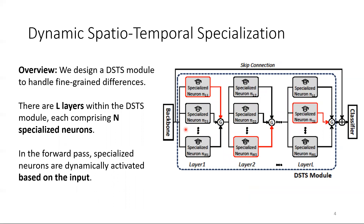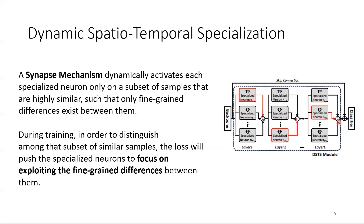Thus, we designed a Dynamic Spatio-Temporal Specialization (DSDS) module to handle fine-grained action recognition. There are L layers within the DSDS module, each comprising N specialised neurons. In the forward pass, specialised neurons are dynamically activated based on the input. Specifically, we designed a synapse mechanism that dynamically activates each specialised neuron only on a subset of samples that are highly similar, such that only fine-grained differences exist between them. Thus, during training, in order to distinguish between that subset of similar samples, the loss will push the specialised neurons to focus on exploiting the fine-grained differences between them.